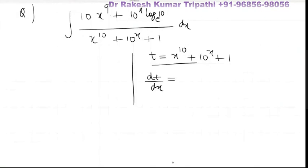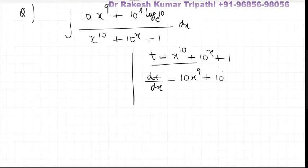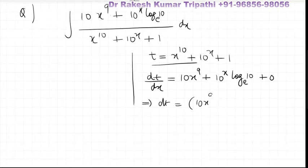Derivative of x to the power 10 will be 10x to the power 9, plus derivative of 10 to the power x will be 10 to the power x log 10 base e, plus derivative of 1 is 0. This we can write dt equals 10x to the power 9 plus 10 to the power x log 10 base e.